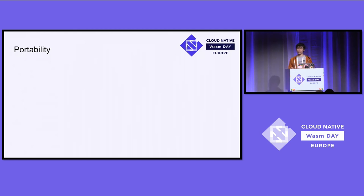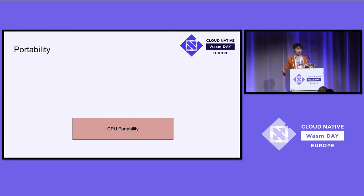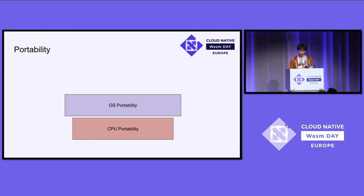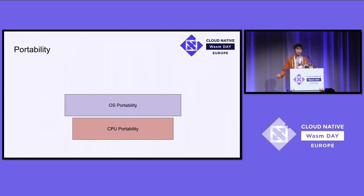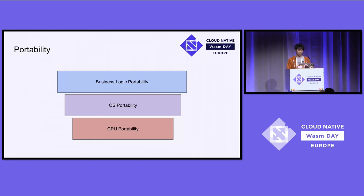A repeating theme in this conference when people talk about Wasm is portability. Dan mentioned portability is one of the things that make Wasm unique. I'd like to categorize different layers of portability. On the bottom layer, we have CPU portability — a binary that can port from one CPU architecture to another, like x86 to ARM, which is exactly what a Wasm module does. On the middle layer, we have operating system portability: POSIX allows any application using POSIX system calls to run on POSIX-compatible operating systems. But Wasm is more than POSIX.